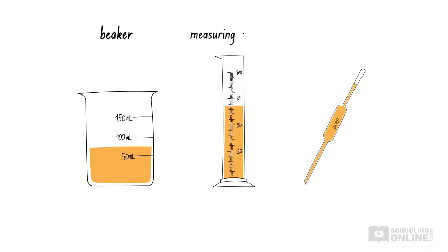If we want to be even more accurate, like when performing titrations, we can use a pipette, which is usually accurate to a fraction of a millilitre.